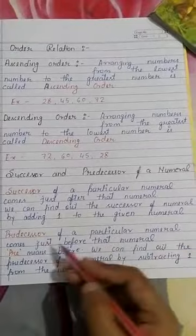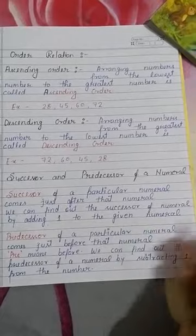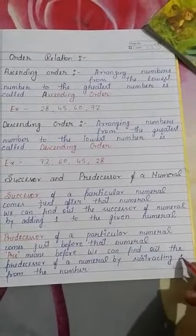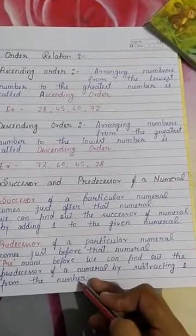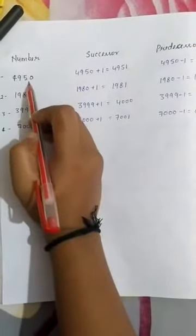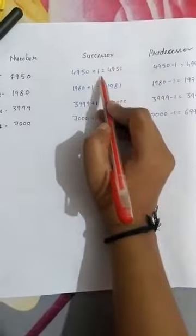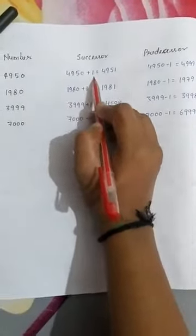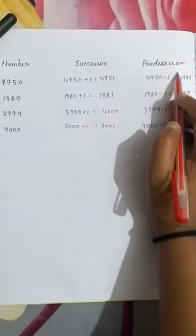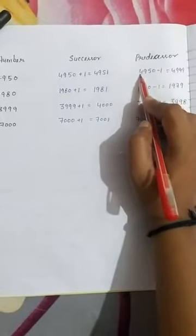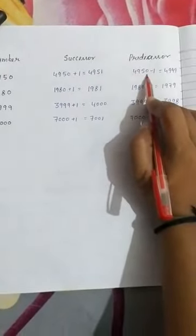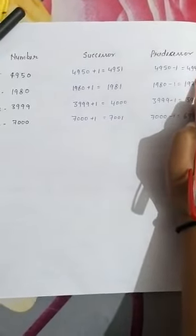Predecessor: the predecessor of a particular numeral comes just before that numeral. 'Pre' means before. We can find the predecessor of a numeral by subtracting 1 from the given number. For example, the given number is 4950. To find the successor: 4950 + 1 = 4951, so 4951 is the successor of 4950. To find the predecessor: 4950 − 1 = 4949, so 4949 is the predecessor of 4950. I hope you all understood. Thank you.